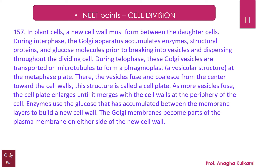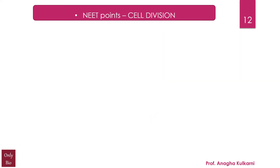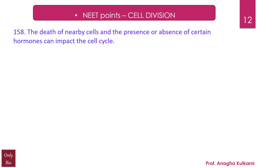As more vesicles fuse, the cell plate enlarges until it merges with the cell walls at the periphery of the cell. Enzymes use the glucose accumulated between the membrane layers to build a new cell wall. The Golgi membranes become parts of the plasma membrane on either side of the new cell wall.